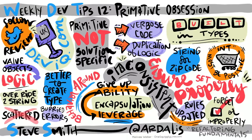You can learn more about the primitive obsession code smell and literally dozens of other code smells along with how to refactor them in my Pluralsight course, Refactoring Fundamentals. That's it for this week. Thanks for listening, and please consider leaving a review on iTunes, Stitcher, or wherever you are listening to this podcast. See you next time on weeklydevtips.com.